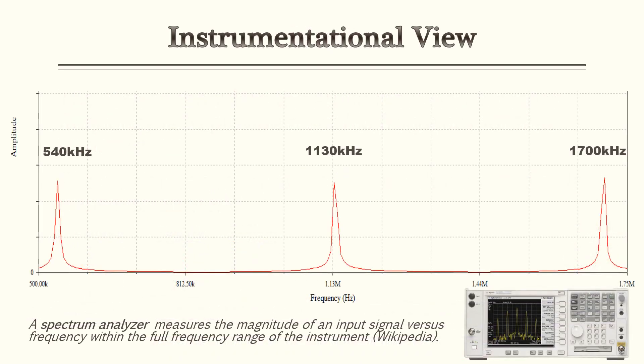To reinforce this concept, a spectrum analyzer was used to illustrate how this information looks on a graph. Monitoring the AM frequency range would give you waveforms similar to what's shown here. For simplicity, only three waveforms are shown: 540 kilohertz, 1130 kilohertz, and 1700 kilohertz. The tip of each spike lands right at those frequencies — those are the carrier frequencies. Upper and lower sidebands will be discussed later. A spectrum analyzer measures magnitude referenced to frequency.